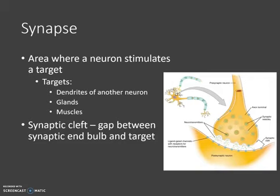Other times it might target a muscle in order to make the muscle contract, or speed up or slow down the muscle contractions, or it might stimulate a gland to release something — like releasing sweat from a sweat gland or releasing hormones from an endocrine gland.